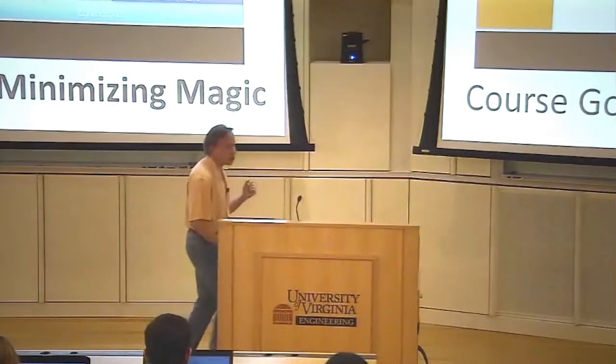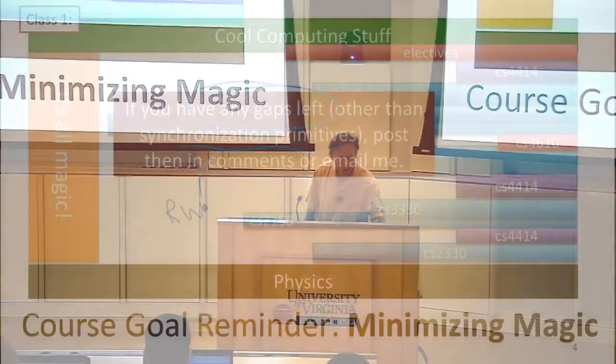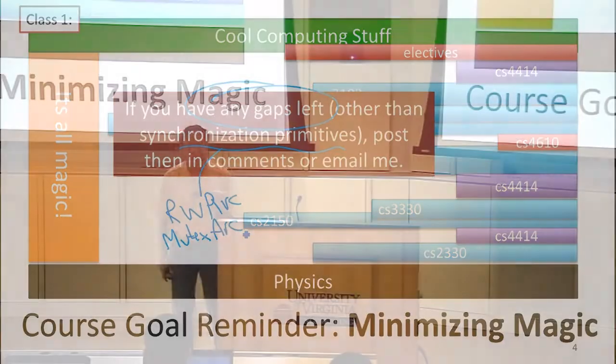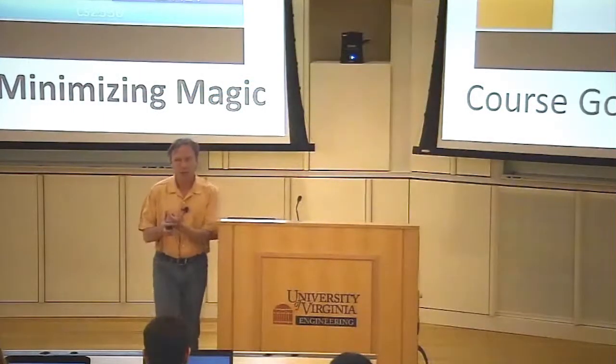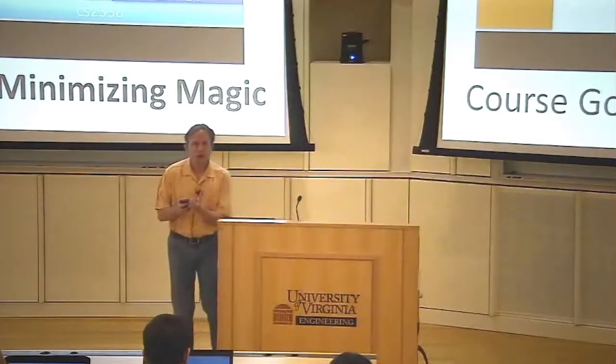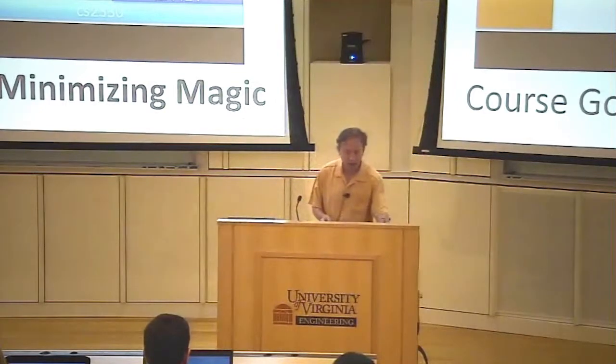You've been doing that - you've been doing it using things built from these. You've been using things like the RW Arc and the Mutex Arc. But you should be pretty curious how those are actually built and how you would build something that can limit access to a resource in this mutually exclusive way unless you start with something that can already do it. We will talk about that next week.